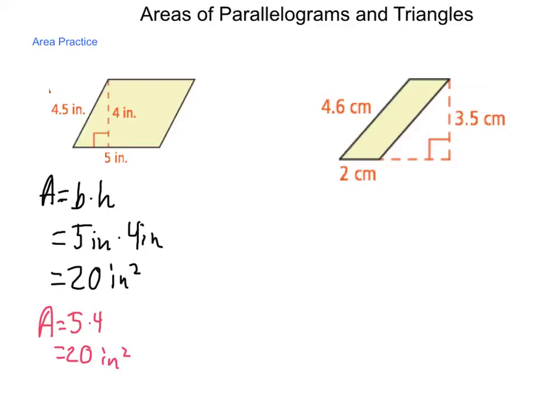For the second one, area again is equal to the base times the height. Here the only right angle displayed is in this location so our base and our height never actually intersect, it's more of an altitude concept and we take that length of the base, the two centimeters, and multiply it by the height of three and a half centimeters.